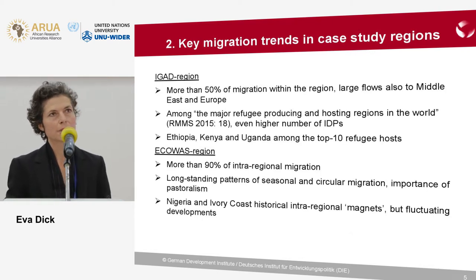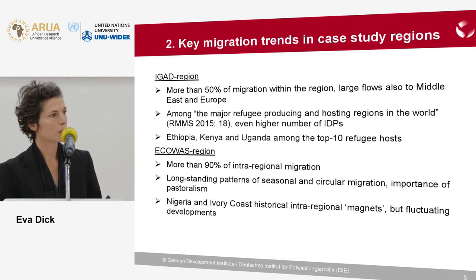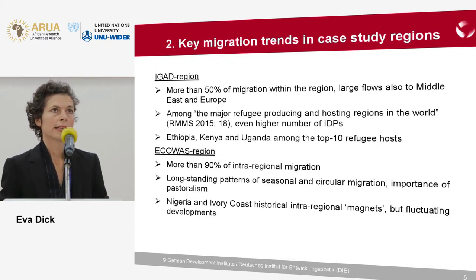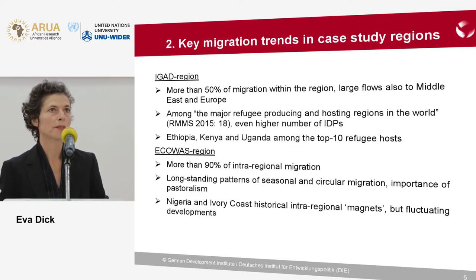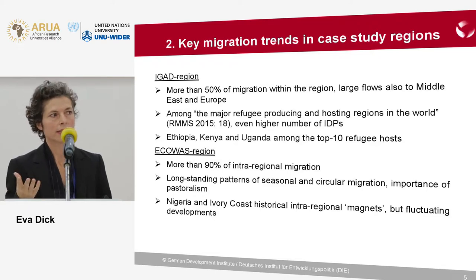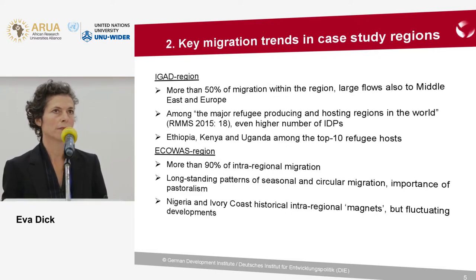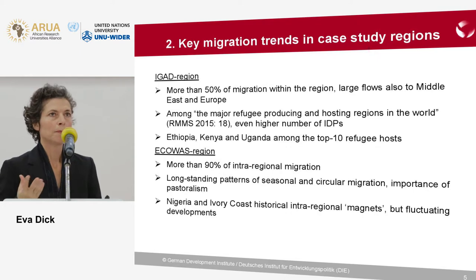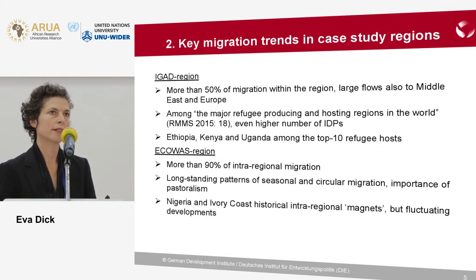Now I come to the key migration trends in the two case study regions, starting with IGAD. In the IGAD region, more than 50% of international migration occurs within the region, but there are also quite large flows to the Middle East and Europe. The IGAD region is among the major refugee-producing and refugee-hosting regions in the world, with large flows of refugees and an even higher flow of internally displaced people. Some IGAD countries such as Ethiopia, Kenya and Uganda are among the top 10 refugee-hosting countries in the world.